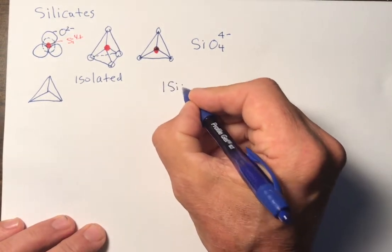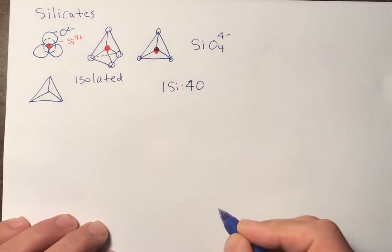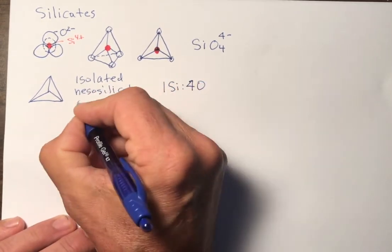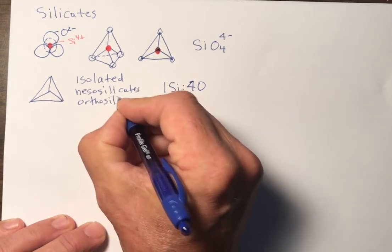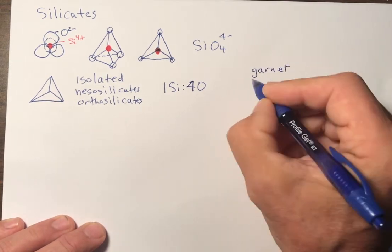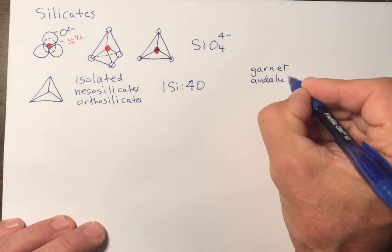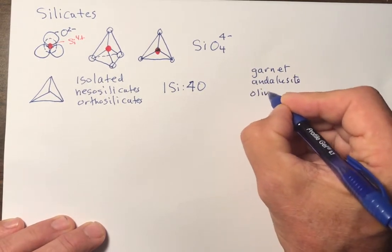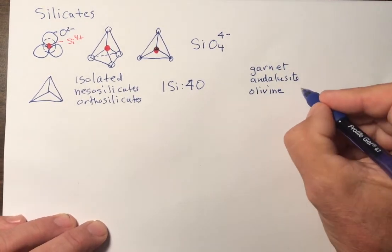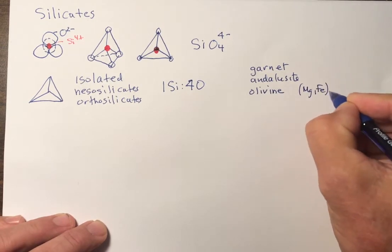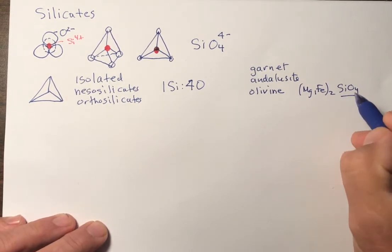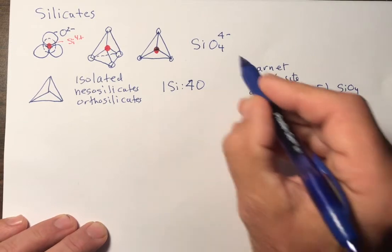One silica, four oxygens, like that. And these are called nesosilicates or orthosilicates. And they include many of the most common minerals. Garnet, aluminosilicates like andalusite, and olivine. Olivine is the most common mineral in the upper mantle and is written as (Mg,Fe)2SiO4. And note, the SiO4 stoichiometry is written out explicitly in the formula, like that.